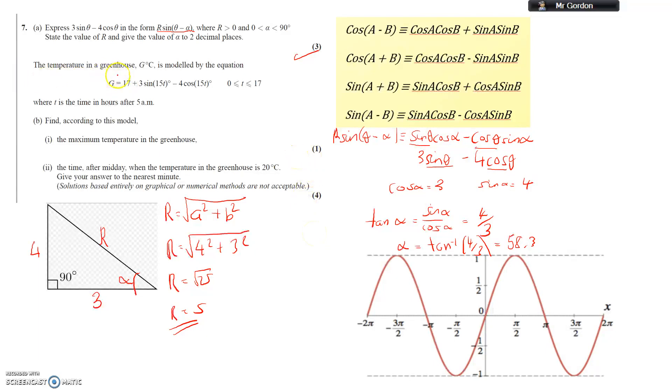Part, oh, the model. We've got a model here. So the temperature in the greenhouse, G Celsius, is modeled by the equation. So here is the equation, and it's to do with this thing up here again. We've got 3 sine theta minus 4 cos theta. So we can express this part in the form that we were asked to give it in here.